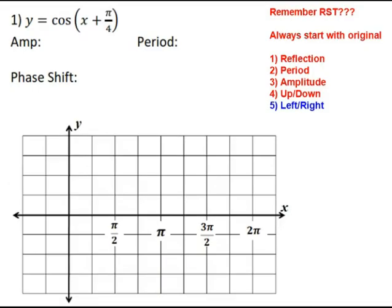For example 1, we're going to take baby steps since it's just cosine of x plus π/4. We'll hammer harder on example 2 where there's a lot more going on. You might remember that in the last lesson we graphed things based on their reflections, stretches and shrinks, and translations — we're going to use the same idea here. We're still graphing cosine and sine functions; it's just now we might have to move things left or right.